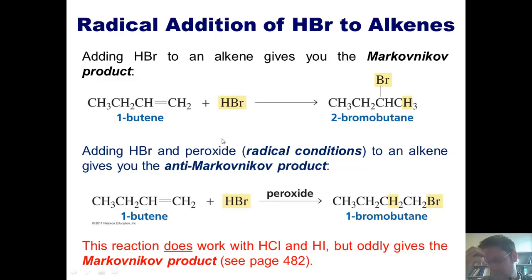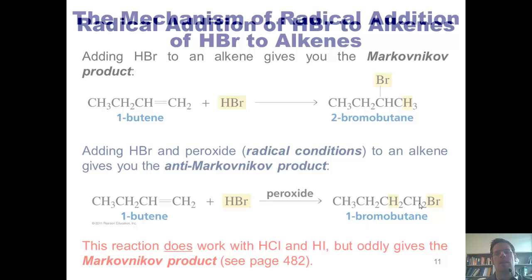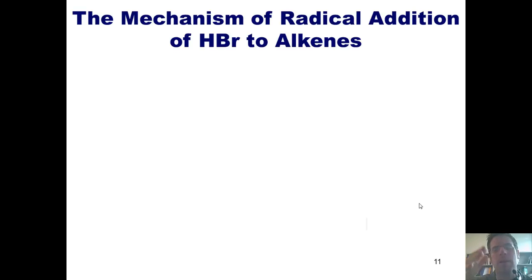At this point, you might be thinking, I understand why adding HBr to a regular alkene gives me the Markovnikov product. But why is doing the exact same thing with peroxide giving me the anti-Markovnikov product? The answer is explained by looking at the mechanism.